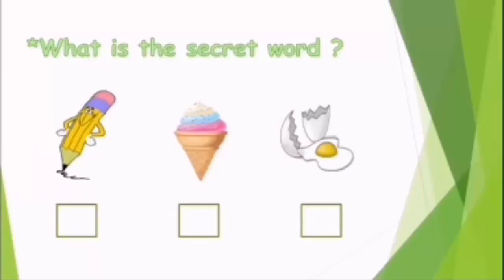What is the secret word? You can see a pencil — it starts with the letter P. Here, ice cream — it starts with the letter I. And egg — it starts with the letter E.